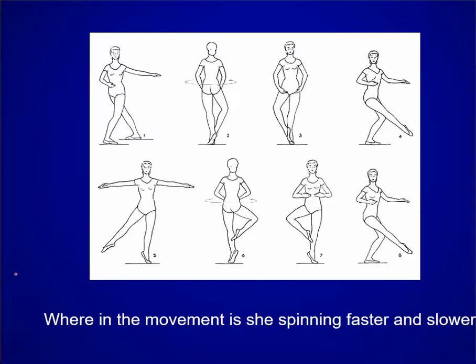For this example of a dancer, where in this movement is she spinning faster? Once she creates an angular impulse, that angular momentum is constant. She would spin faster at points where her moment of inertia about the longitudinal axis was the least — that would be positions 2 and 3, small moment of inertia. Her moment of inertia gets larger from 4 to 5, so she slows down, and then as she decreases her moment of inertia again, she speeds up.